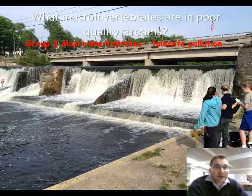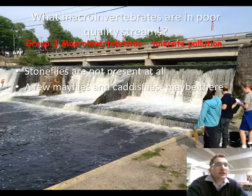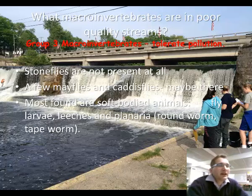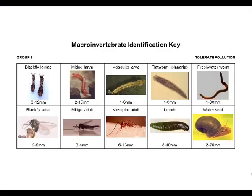Group 3 macroinvertebrates all tolerate pollution. Stoneflies are not present at all in a Group 3 stream — most have died off due to pollution. There are a few mayflies and caddisflies that may be found, but the overall population will be minimal. Most organisms found are soft-bodied animals: fly larvae, leeches, and planaria — examples include roundworms and tapeworms. Some amphipods, which are fast-moving shrimp-looking creatures, may also be found. If we find large populations of these pollution-tolerant macroinvertebrates, we can conclude that the overall stream health is probably not fantastic.